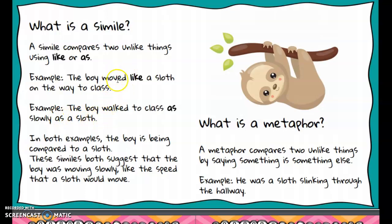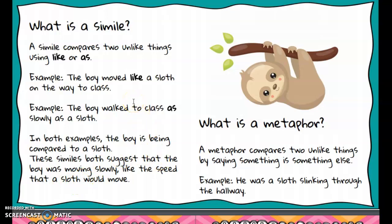Both of these sentences are comparing a boy to a sloth — those are the two things being compared. What could the author mean by that? We're not saying the boy is a sloth; we're saying he moves very slowly. These similes suggest the boy was moving at the slow speed of a sloth. We have to look past what the sentence literally says to get the figurative meaning of what the author is truly trying to say.